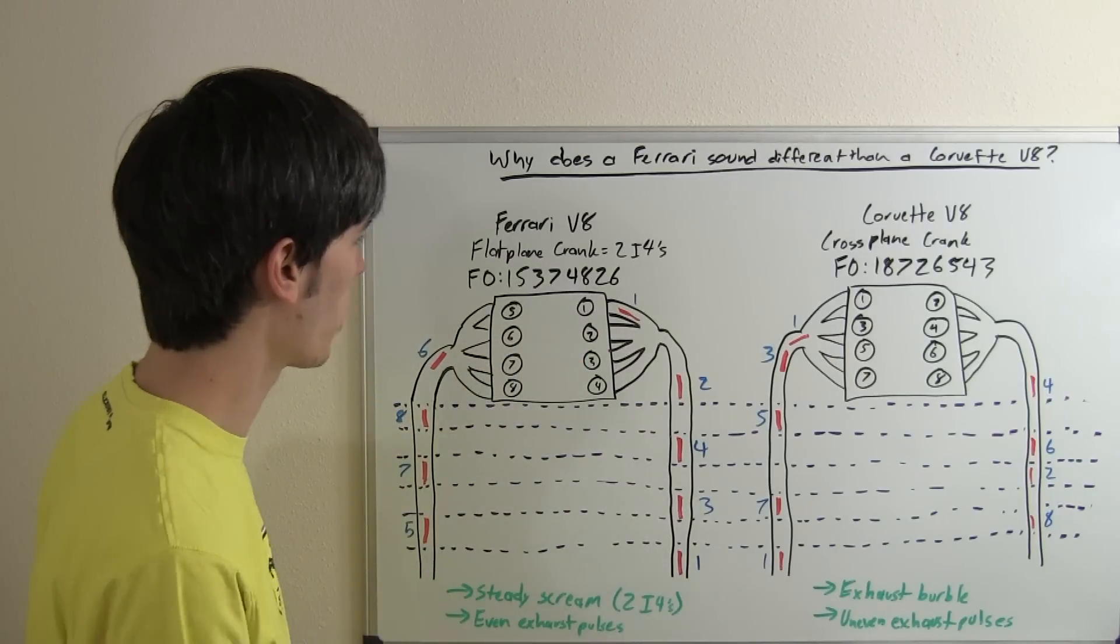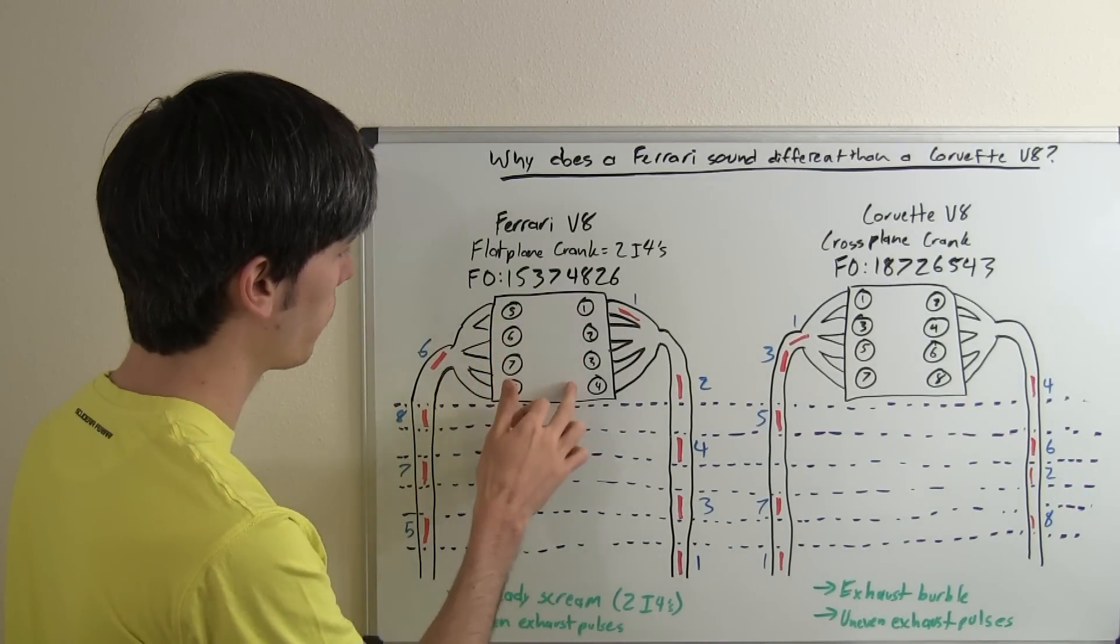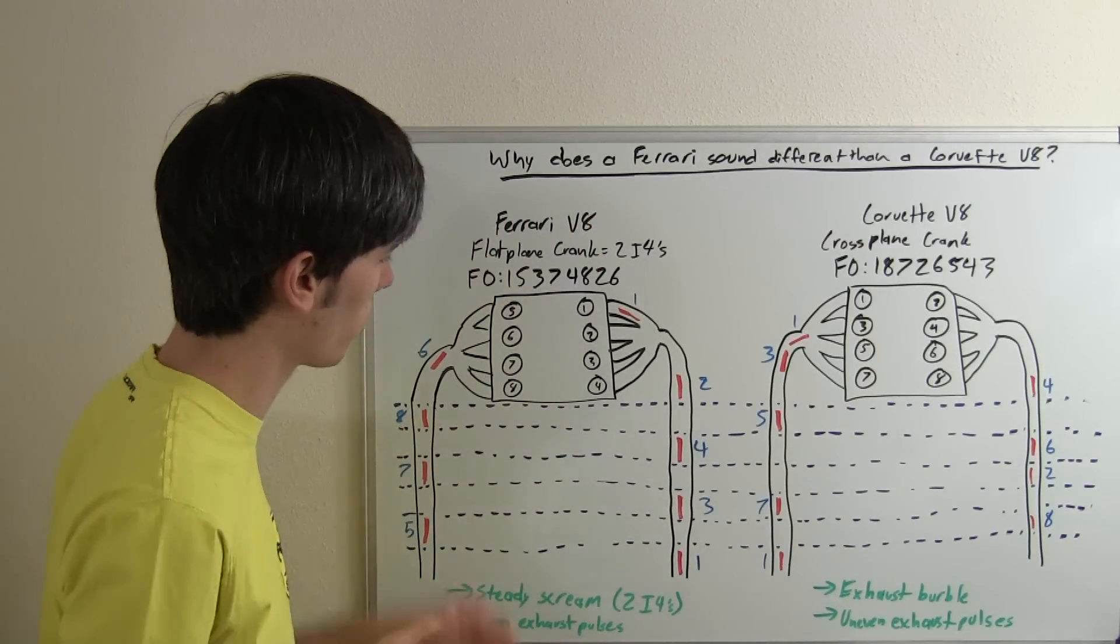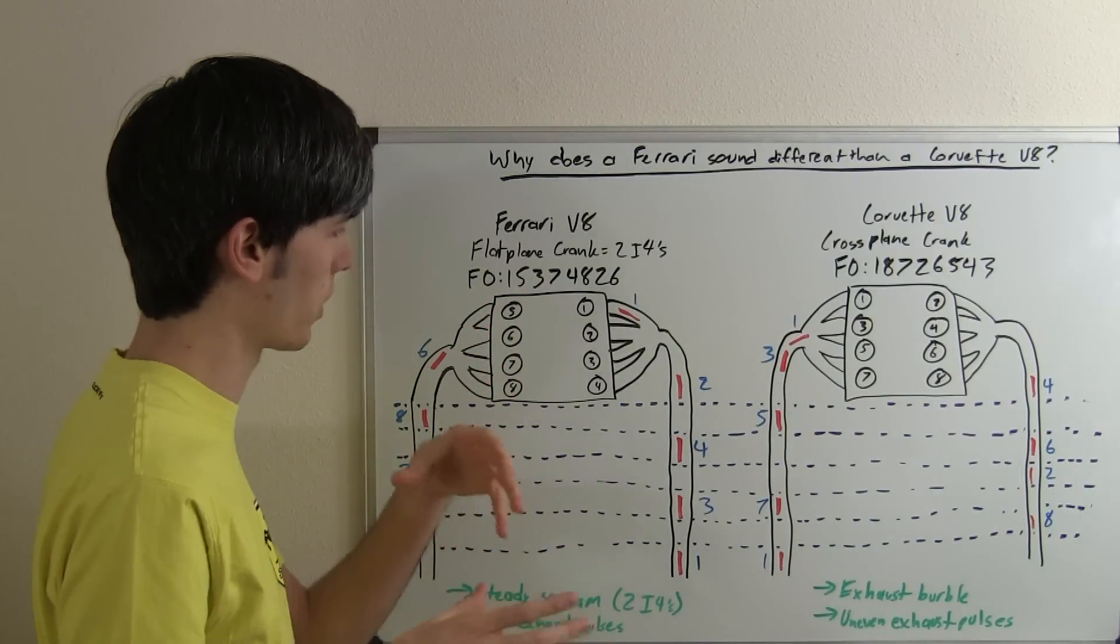So here we have our Ferrari V8. The numbering system on this Ferrari V8 is 1, 2, 3, 4. This will be the front of the car here, and then 5, 6, 7, 8 down the right side of the engine if you're looking towards the car.